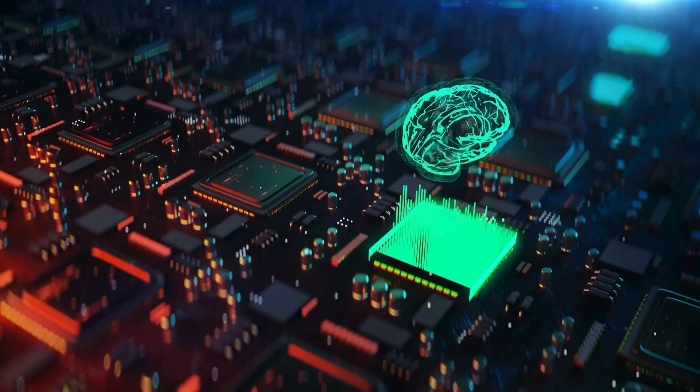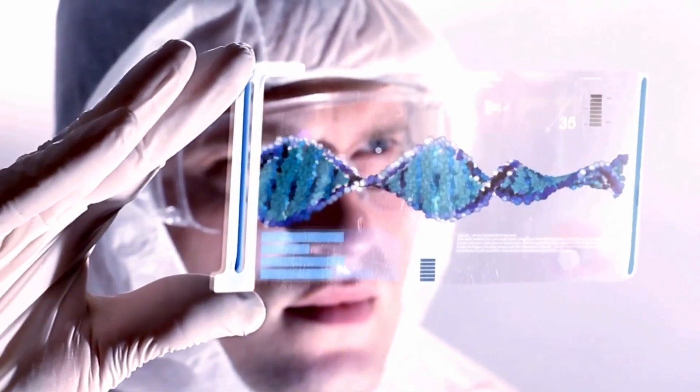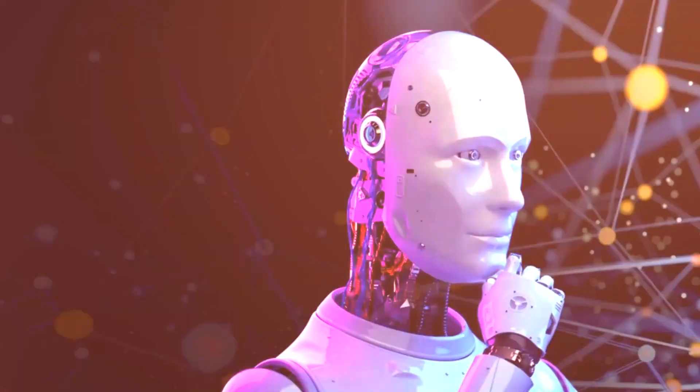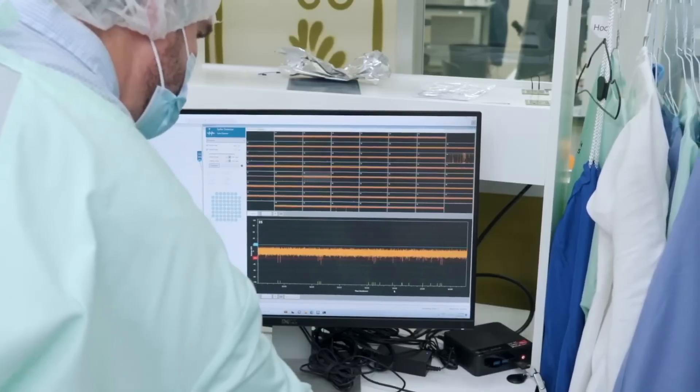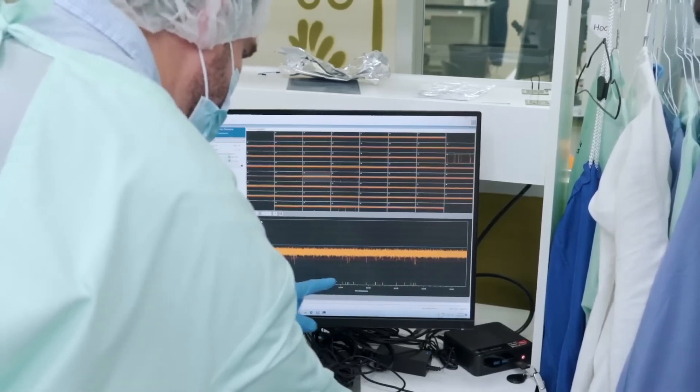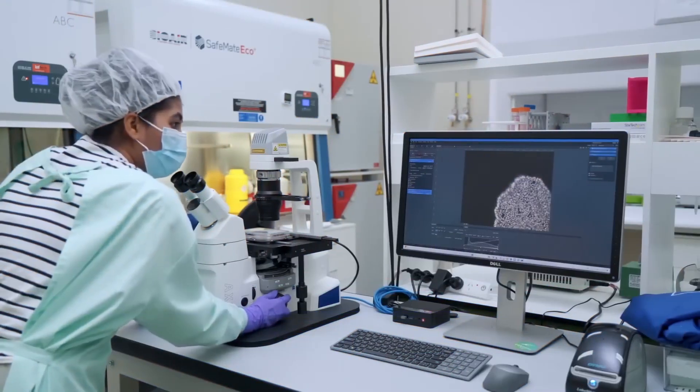When a person thinks, signals travel through these neurons in the brain. Neurons are connected to create what is known as a neural network. Researchers refer to the brain's network as wetware, drawing comparisons to hardware and software. The brain acts as a natural processing unit that is more sophisticated than artificial intelligence.